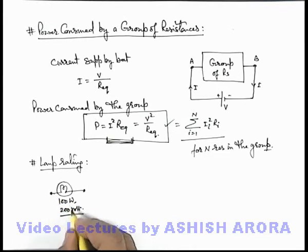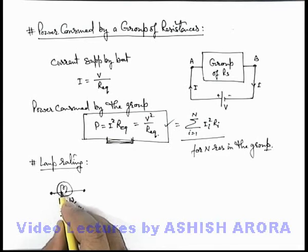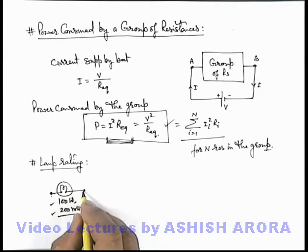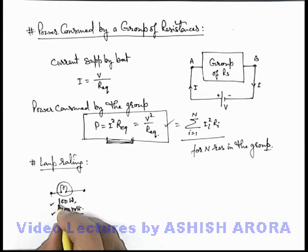Even if you have a look on different lamps in your domestic circuits, you'll see that on each lamp there are two parameters written: one is the power consumption and other is the proper voltage rating. It gives us an idea that when the lamp is applied two hundred volt potential difference, then it consumes hundred watt power.